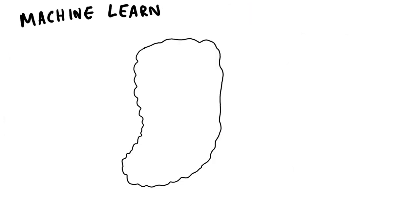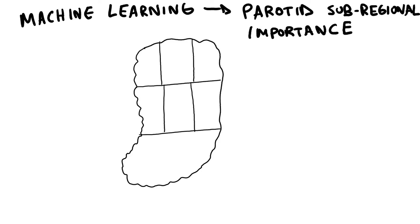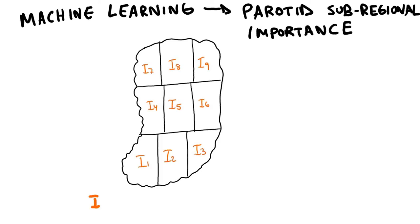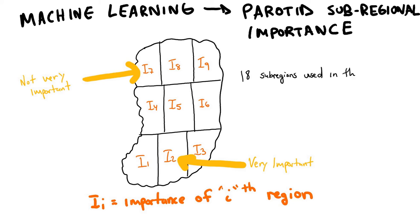The relative importance of different subregions within the parotid glands for predicting post-treatment xerostomia was recently quantified, revealing that radiation to certain chunks within the parotid gland appears to be much more detrimental than radiation to other chunks. Our work aims to incorporate this new data into the treatment planning process.